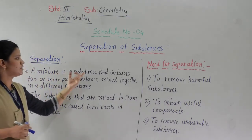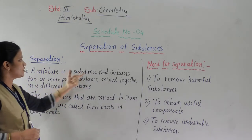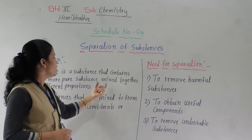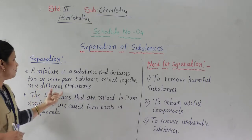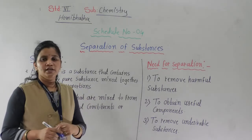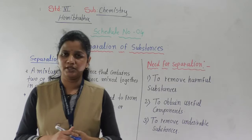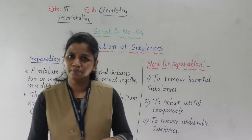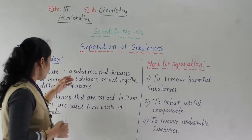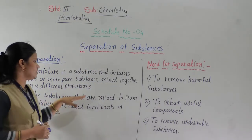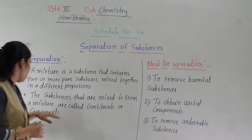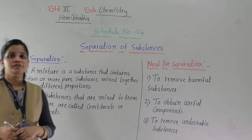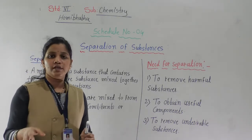A mixture is a substance that contains two or more pure substances mixed together in different proportions. That is known as a mixture. The substances that are mixed to form a mixture are called the constituents or components — meaning, which substances are mixed together to form the mixture.